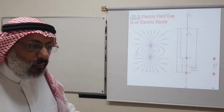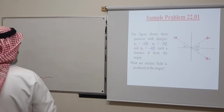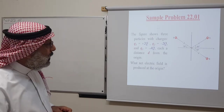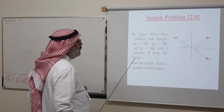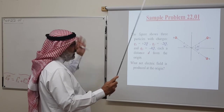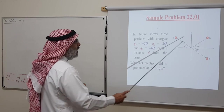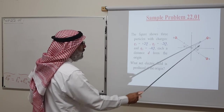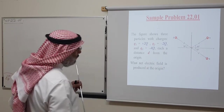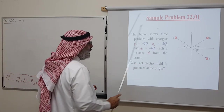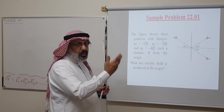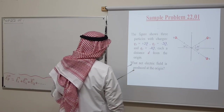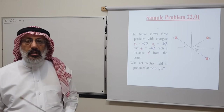Sample problem 22-01: the figure shows three particles Q1, Q2, and Q3 with charges Q1 = +2Q, Q2 = −2Q, and Q3 = −4Q. Each is separated by a distance d from the origin, and each makes an angle of 30 degrees with the respective axis. We want to find the net electric field at the origin.